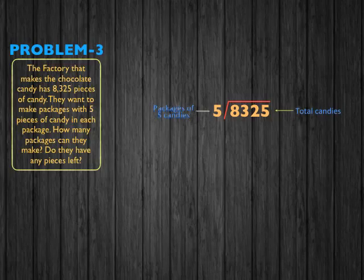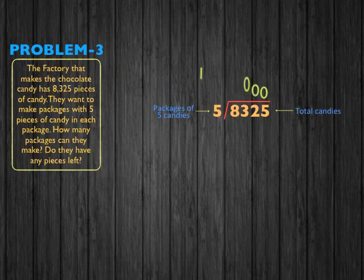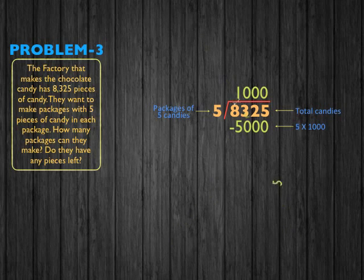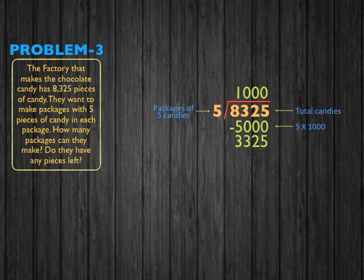In this problem, we're going to start off with thousands instead of hundreds. How many groups of thousands can we make of five to get close to 8,325? The answer is 1,000. Because 1,000 times 5 equals 5,000. So 8,325 minus 5,000 gives us 3,325 candies left over.